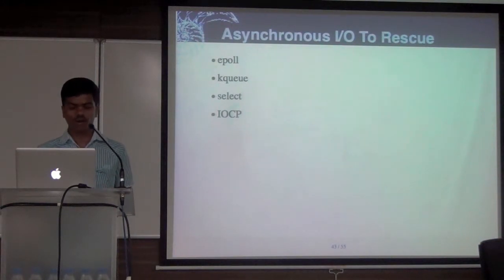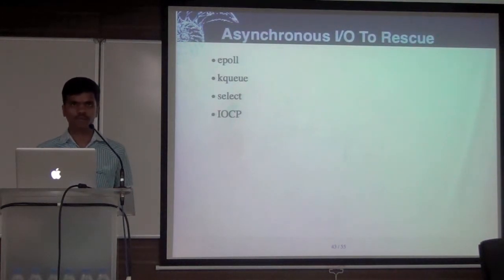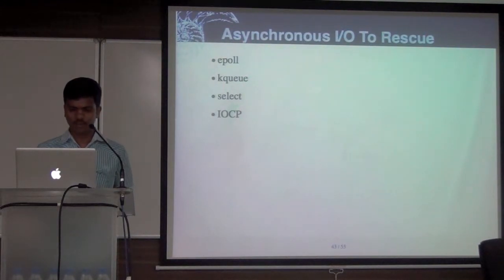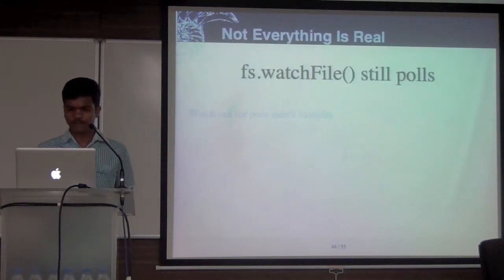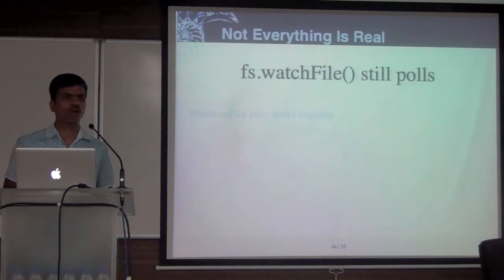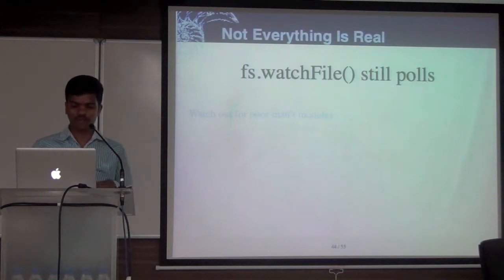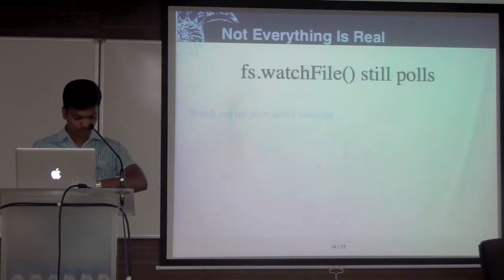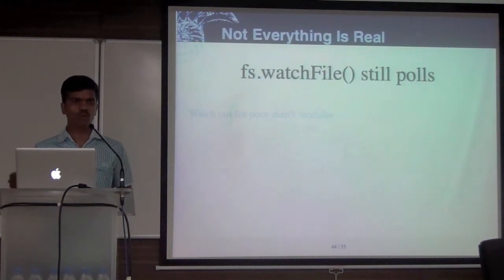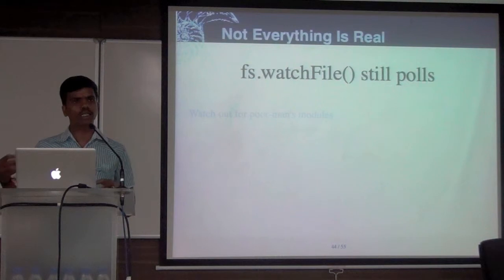kqueue, select — all of these are system-level calls used to handle asynchronous IO. Using these things, asynchronous operation is maintained. But the problem is there are still certain function calls which don't do proper asynchronous. For example, watching if a file is modified or not — there's no proper mechanism for the OS to notify you, so there's a separate thread internally that keeps polling whether the file is modified.